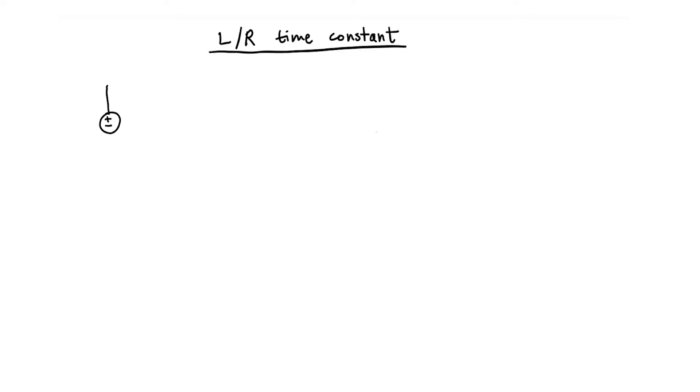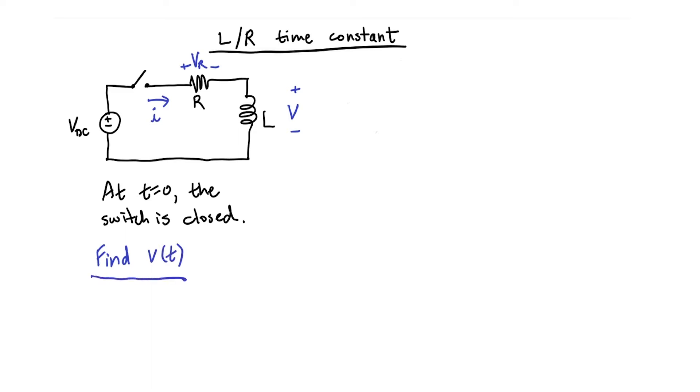To illustrate the L over R time constant, I'm going to draw a simple circuit involving only three circuit elements: a voltage source, an inductor, and a resistor. And we'll imagine that we also have a switch. At time t equals zero, I'm going to turn on the switch. Let me now label the voltages and currents in the circuit. What I want to do here is to find the voltage across the inductor as a function of time. So this is the goal of this video.